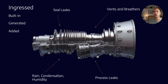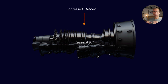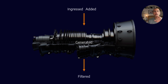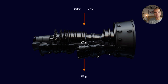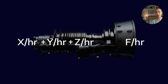If we ignore built-in contamination for a moment — because that's really a once-off; you get the product delivered, flush out the built-in contaminants, and hopefully never deal with it again — then with ingressed, generated, and added contamination, we can put together an equation. You have ingressed and added contaminants going into your system, generated contaminants created inside the system, and you have to filter out all three categories. If we give each a number qualified in particles per hour, we get a formula: x plus y plus z equals f. This represents a system in equilibrium, where I'm filtering out as many contaminants as are being produced or entering the system.